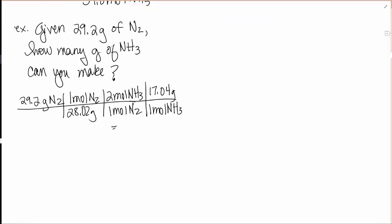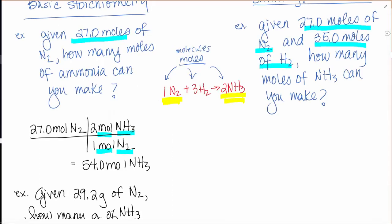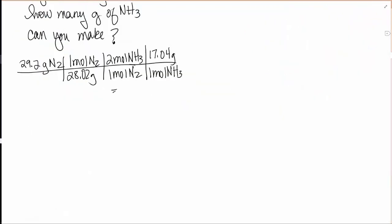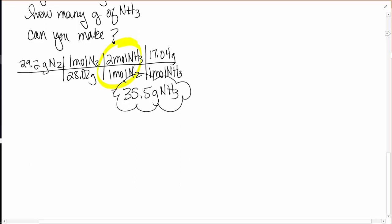Does that make sense? So I also got 35.5 grams of ammonia. The only thing I'm adding right now to what we already knew is this step, which means we have to have a balanced equation. If I give you something and the equation's not balanced, you have to balance it to get these numbers.